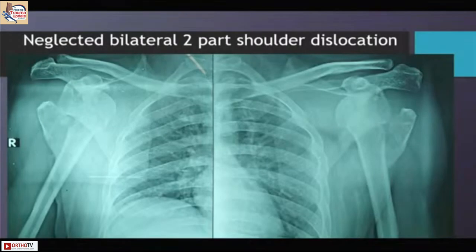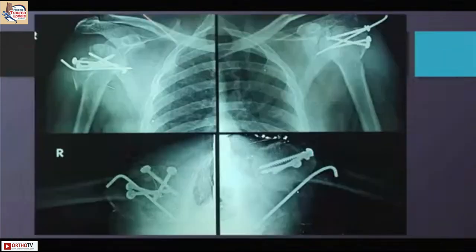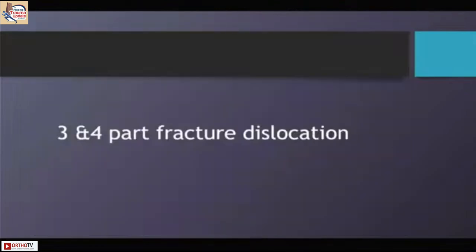This is a neglected two-month-old bilateral fracture dislocation in an epileptic patient. The fragment goes posterosuperiorly; you have to dissect subdeltoid, bring the fragments out, hold them together, and try to do a fixation. Avoid putting K-wires into the glenohumeral joint as it is cumbersome. Use augmented fixations for three-part and four-part fractures.